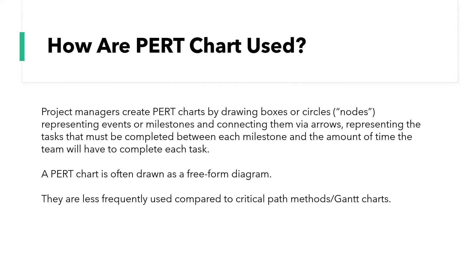That leads us into how they are used. Project managers often create them by drawing boxes or circles, and these are known as nodes. These nodes represent events or milestones, and they're connected via arrows, which represent the tasks that must be completed between each of these milestones and the amount of time required to complete each task. It's often drawn as a free-form diagram, and I'll be showing you some examples in future slides.